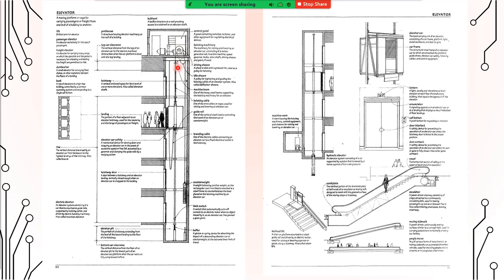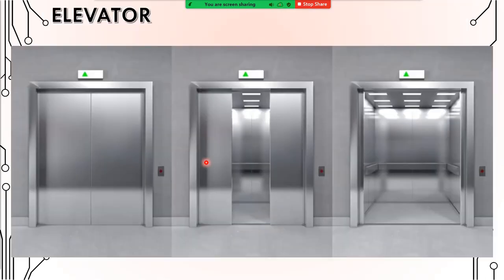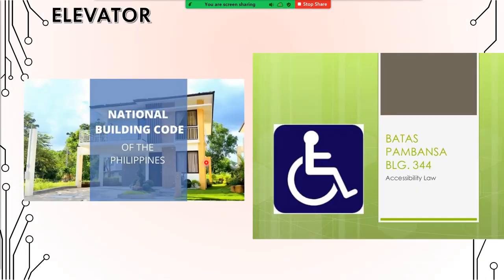I will be sending a handout with a copy of this information. In elevator design in the Philippines, we are guided by two building codes: the National Building Code PD 1096, and BP 344 — the law to enhance the mobility of disabled persons.